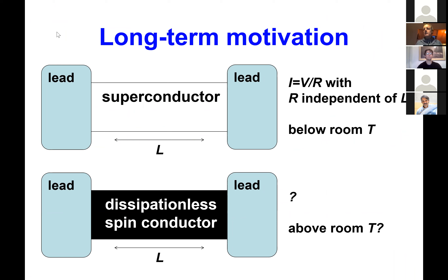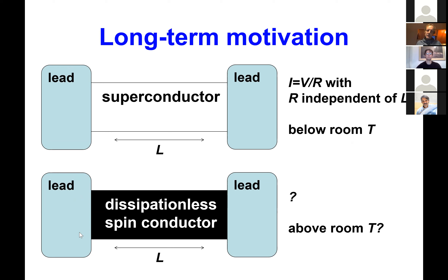Let me give the standard long-term motivation of this work. The idea is to try to replace superconductors with something equivalent but for spin. For a superconductor connected to two metallic leads, there's no voltage drop across the superconductor itself — the resistance is only due to conversion processes between the lead and the superconductor — and this works below room temperature.